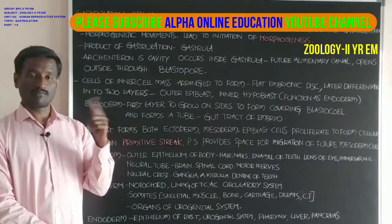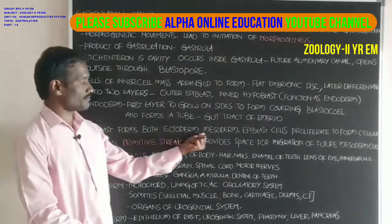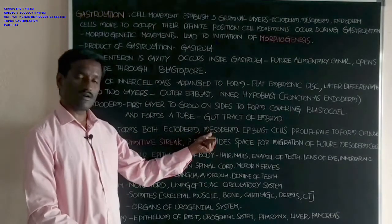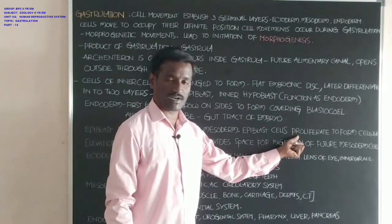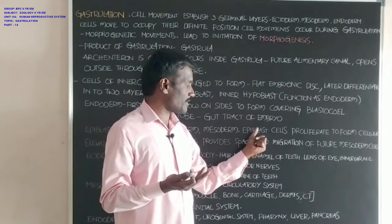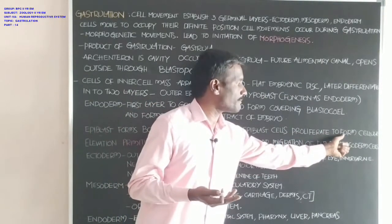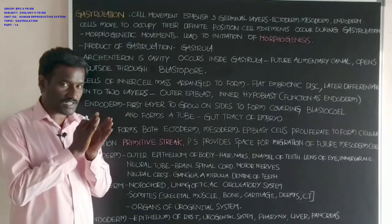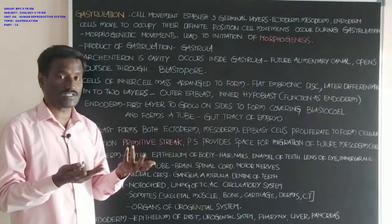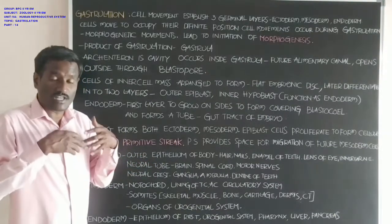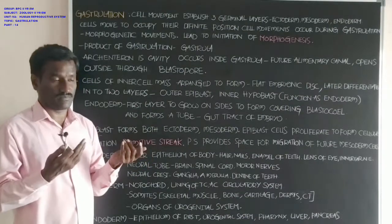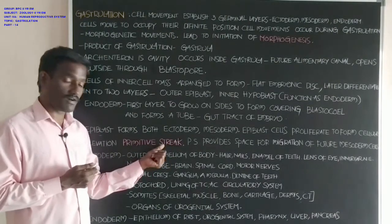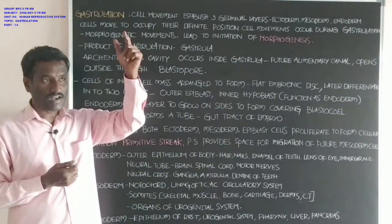The embryonic disc consists of epiblast and hypoblast. The cells present in the epiblast form both ectoderm and mesoderm. Epiblast cells proliferate — meaning rapid production — to form a cellular elevation. This cellular elevation is called the primitive streak, formed along the longitudinal axis of the embryonic disc.